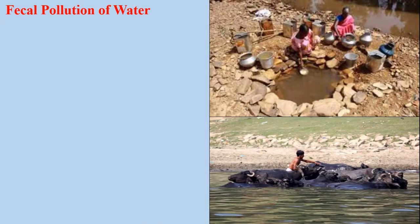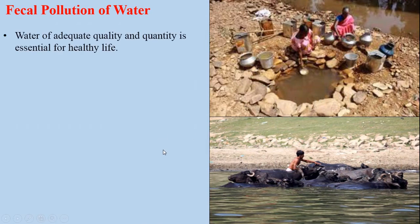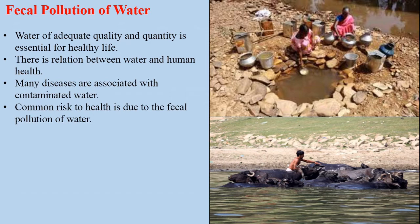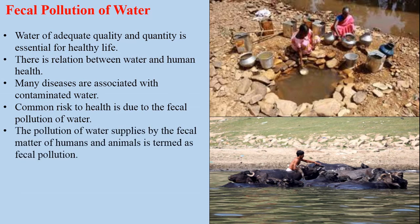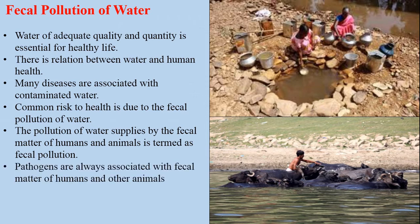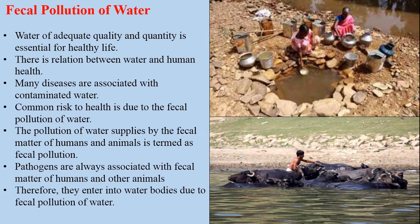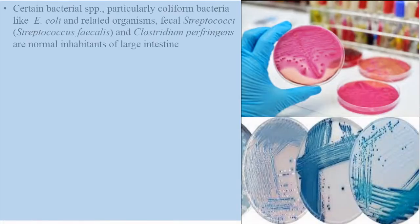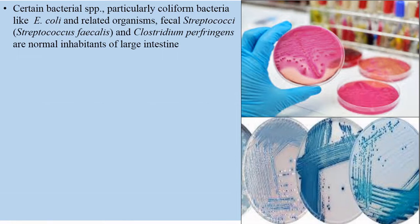Water of adequate quality and quantity is essential for healthy life. There is a relation between water and human health, and many diseases are associated with contaminated water. One of the important observations is that in most communities, the common risk to health is due to fecal pollution of water. The pollution of water supplies by the fecal matter of humans and animals is termed fecal pollution. Certain bacterial species, particularly coliform bacteria like Escherichia coli and related organisms, fecal streptococci particularly Streptococcus faecalis, and Clostridium perfringens are normal inhabitants of the large intestine of humans and other animals.